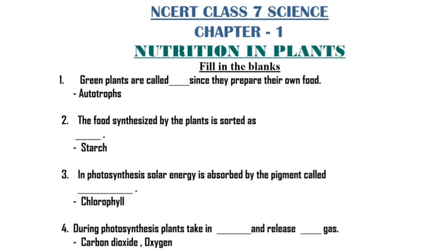Next is fill in the blanks. First question: green plants are called autotrophs since they prepare their own food. Number two: the food synthesized by the plants is stored as starch. Number three: in photosynthesis, solar energy is absorbed by the pigment called chlorophyll.